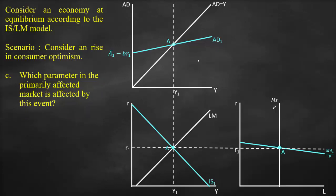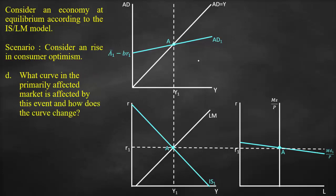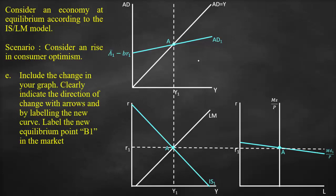The next parts ask which parameter and which curve in the primary affected market are affected. Higher consumer optimism leads to higher consumption. Because of higher consumption, aggregate demand will shift upward.